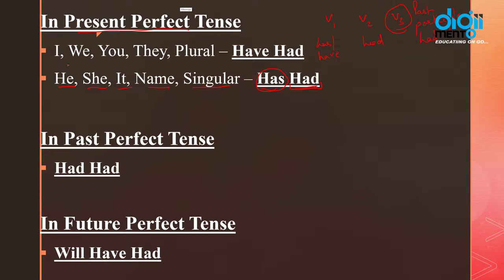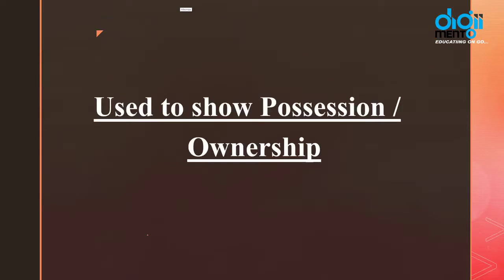Jab hum baat karte hain I, we, you, they aur plural — jo hamare subjects hote hain — unke saath hamaara helping verb 'have' hota hai, aur again hum jaante hain perfect tense mein hamesha verb ki third form use hoti hai, which is 'had'. In case of a past perfect tense, helping verb hota hai 'had', toh uske saath bhi hamesha verb ki third form aayegi — so 'had had'. In case of a future perfect tense, helping verb hota hai 'will have', aur uske saath verb ki third form aayegi, jo 'had' hogi.